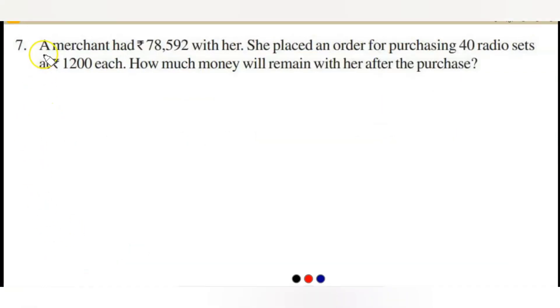The next question is, a merchant had 78,592 rupees with her. She placed an order for purchasing 40 radio sets at 1,200 rupees each. How much money will remain with her after the purchase? She already has 78,592 rupees and she wanted to purchase 40 radio sets. Each radio set cost is given 1,200 rupees. So you need to first find how much she has spent on 40 radio sets and that amount you subtract from what she already has.